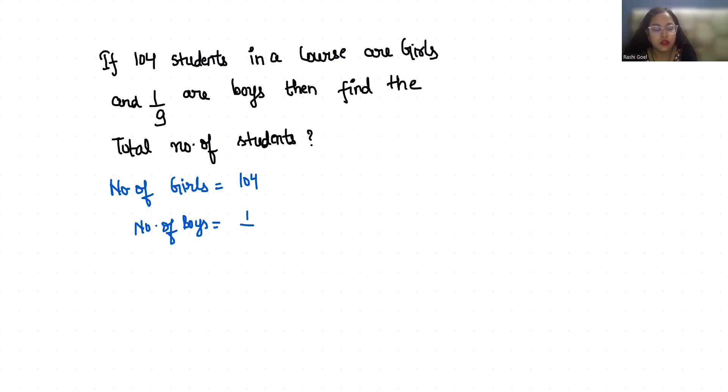Now to find the total number of students we will set up an equation. So what is the equation? Number of girls plus number of boys equals total students. Now number of girls are 104 and number of boys are 1/9 of total students.